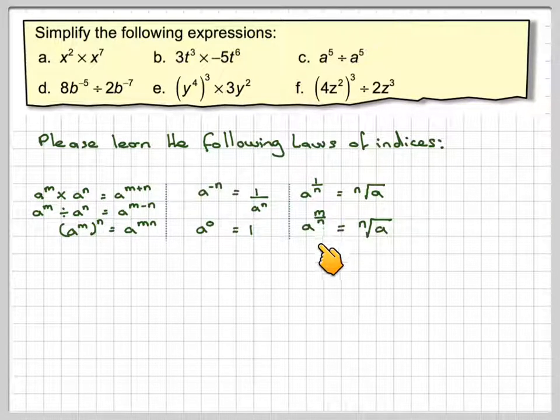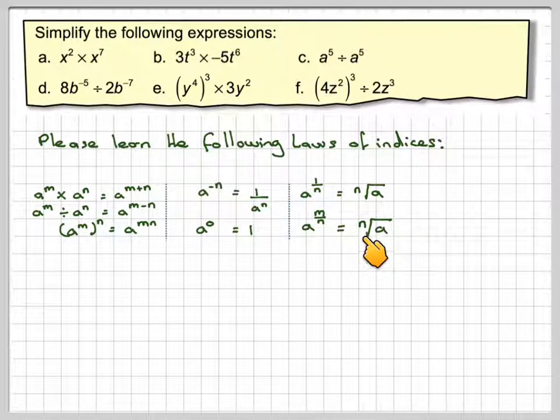a to the m over n means you take the nth root of a, and then you raise the whole thing to the power of m. You can do things in the other order, but it's often better to take the root first and then raise to the power.